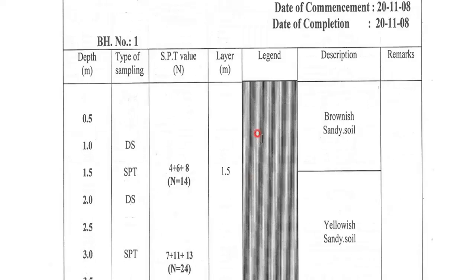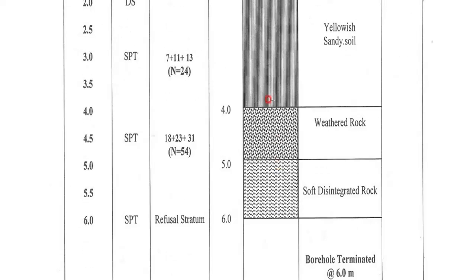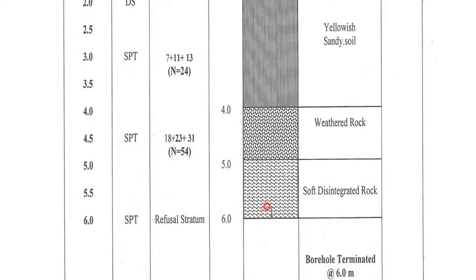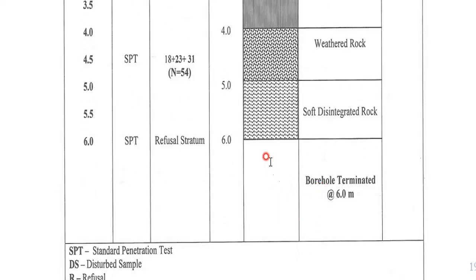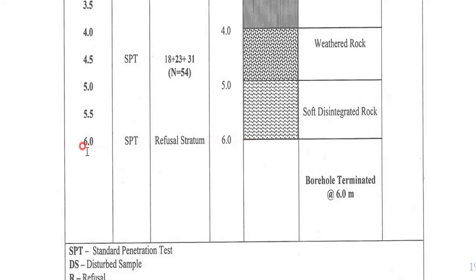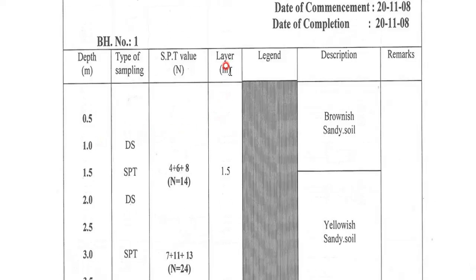The borehole log contains: project name, client, location, type of borehole (manual), borehole diameter (150 mm), groundwater level (not observed), and dates of commencement and completion. The legend shows different hatched areas indicating different soil strata — for example, brownish sandy soil, yellowish sandy soil, weathered rock, and soft disintegrated rock. Since this is a manually made borehole, the depth is only six meters. Columns include: types of sample, SPT N values, description, and you can add more columns like c-value, phi-value, density, liquid limit, and plastic limit based on your requirements.